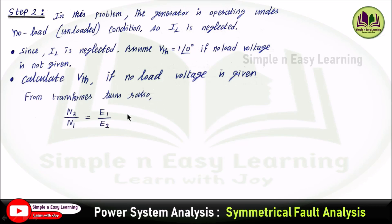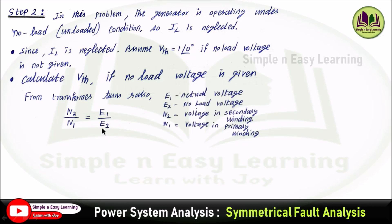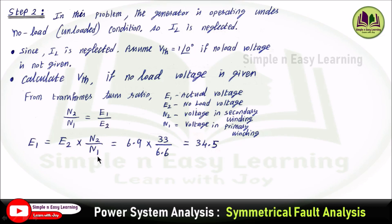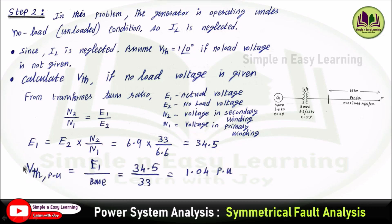From the transformer turns ratio: N2/N1 = E1/E2, where E1 is actual voltage and E2 is the no-load voltage. So E1 = E2 × (N2/N1). E2 is 6.9 kV, N2 is 33, and N1 is 6.6, giving E1 = 34.5 kV. The Thevenin voltage in per unit = actual voltage / base voltage = 34.5 / 33 = 1.04 per unit. Since the fault occurs at section 2, the base kV is 33 kV.